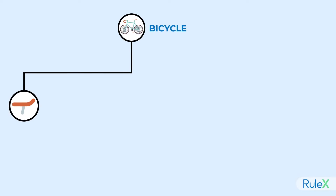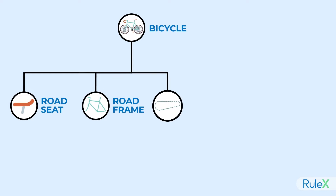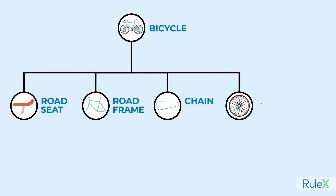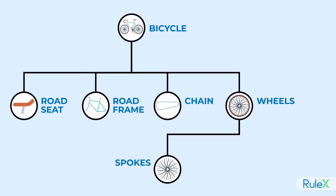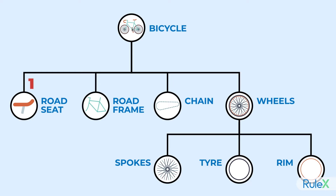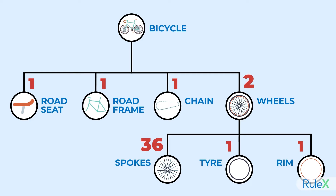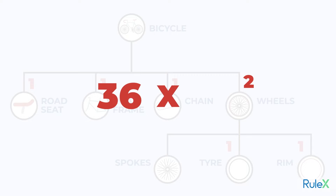BOMs can be viewed as hierarchies. A bike is made up of a seat, a frame, a chain, and wheels. Wheels in turn are made up of tires and spokes. To build up a bicycle, we also need to know the quantities of each component. For example, a bike has two wheels and each wheel has 36 spokes.